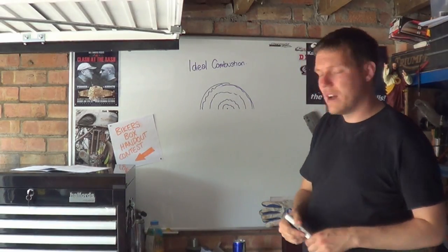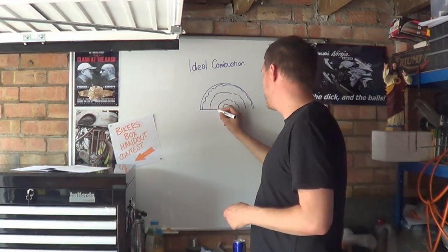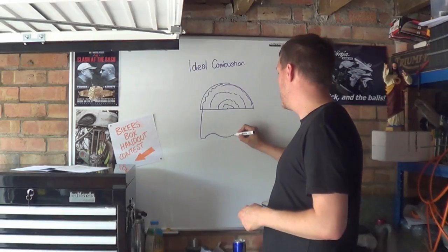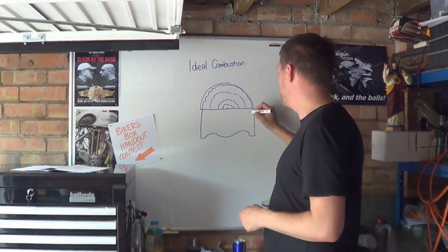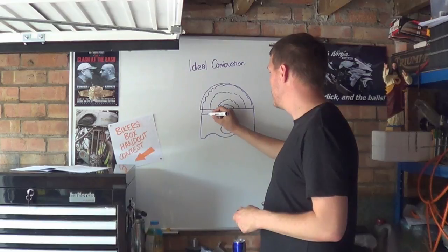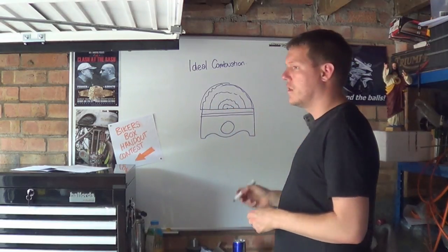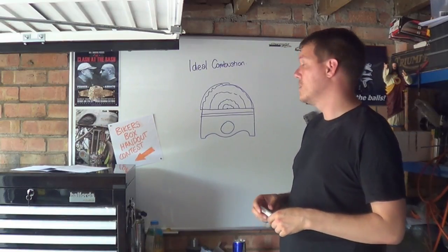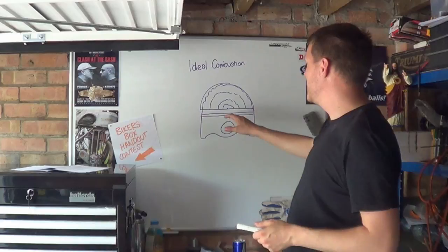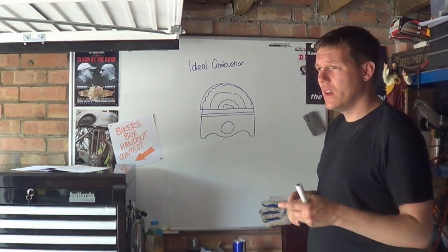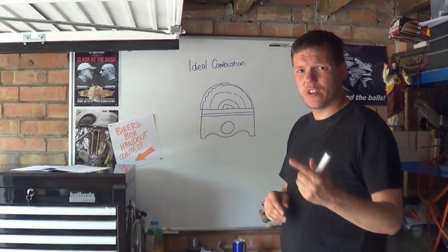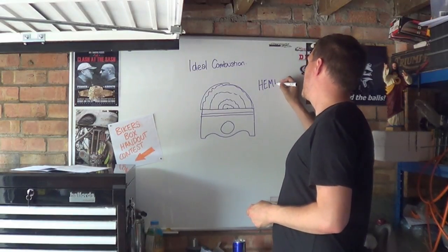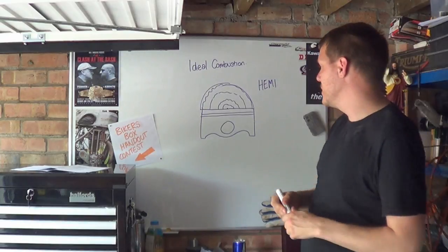What was done is someone said well we can't have this, we can cut this in half and make this a hemisphere and then we can stick our piston here.